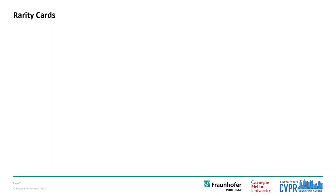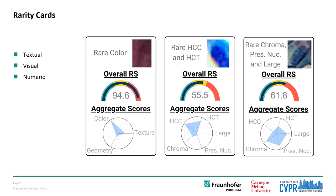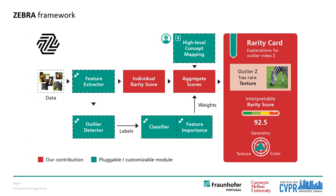ZEBRA presents its findings through multi-modal rarity cards, blending textual, visual, and numerical explanations that highlight the level of rarity of a sample. That's ZEBRA — a unique framework for explainable anomaly detection.